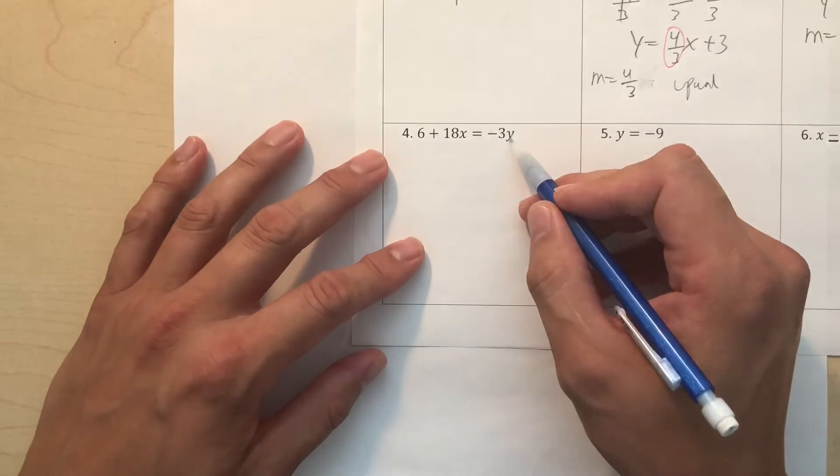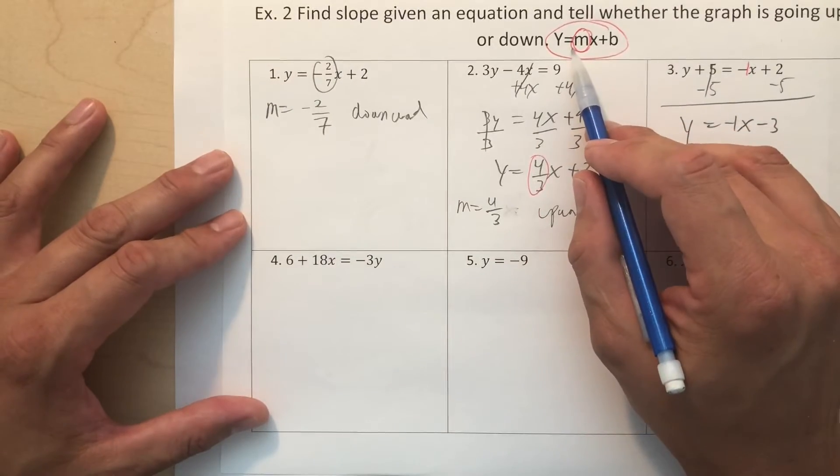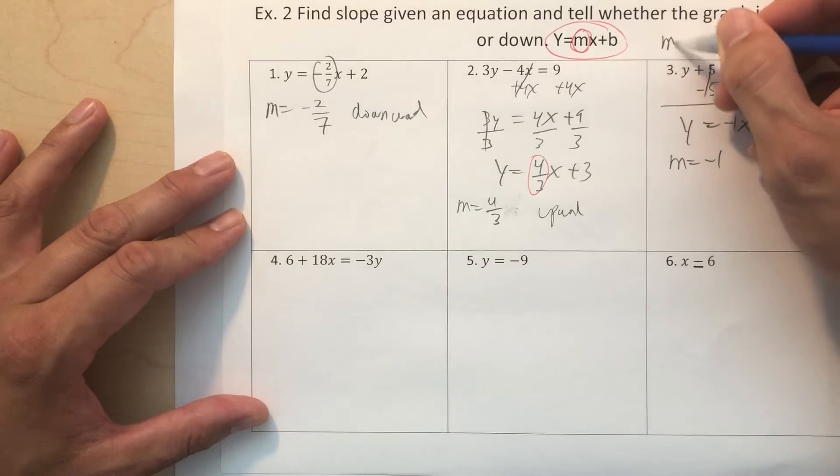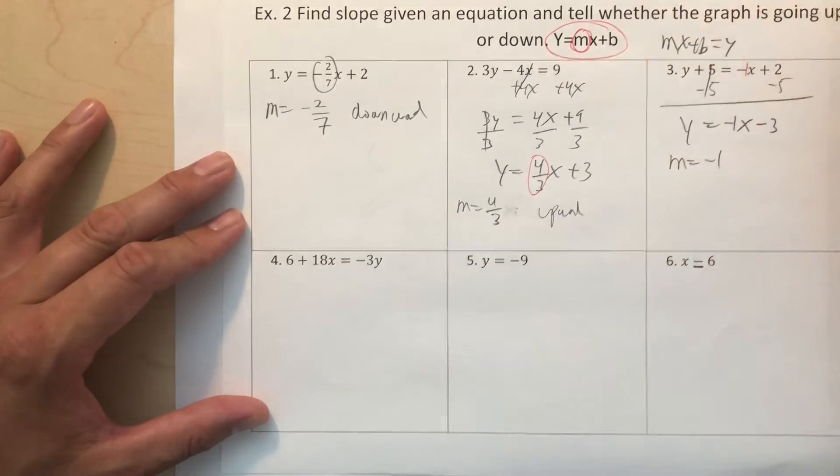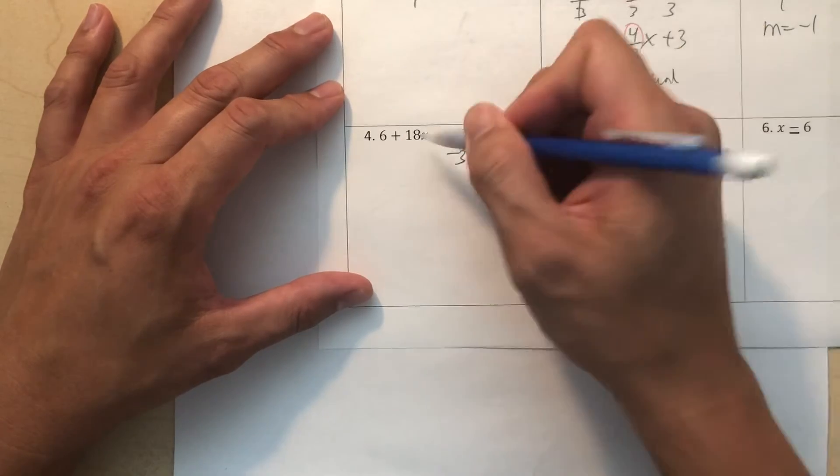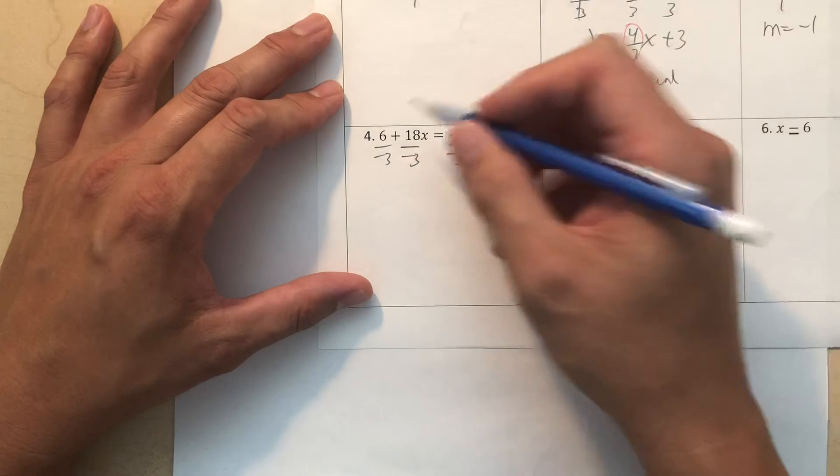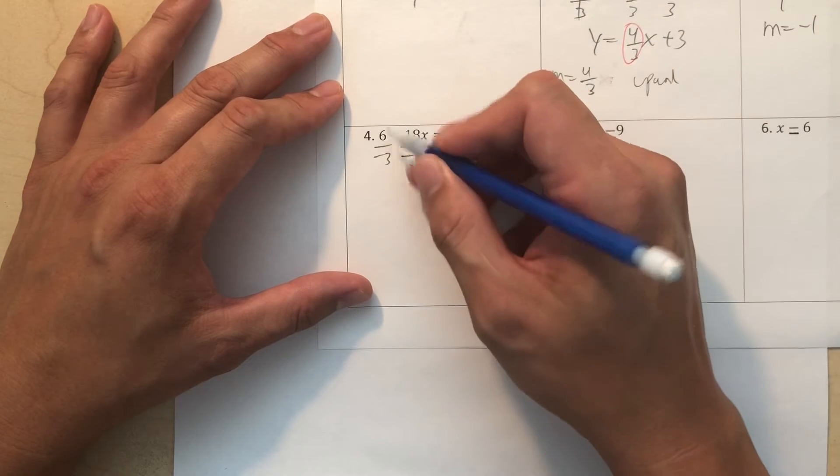Let's go ahead and do number 4. Now, for your equation, y is equal to mx plus b. If your y is on the other side, meaning that it's mx plus b is equal to y, that means the same thing. So as I can see, if it's just divided by negative 3, then I already know what my slope is.